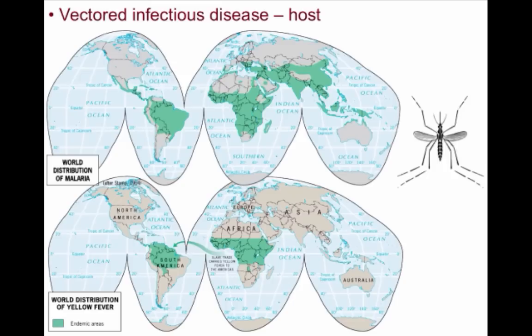Other vectors include fleas, flies, worms, and snails. There are many other terrible vectored infectious diseases mostly found in tropical climates, such as yellow fever, which can cause chills, nausea, fever, muscle pain, and can make the victim jaundiced, making their eyes and skin yellowish.